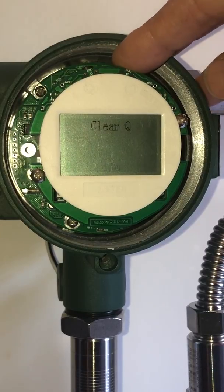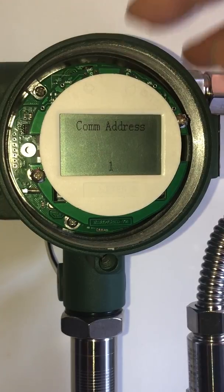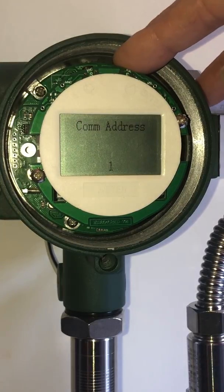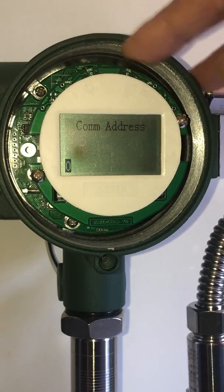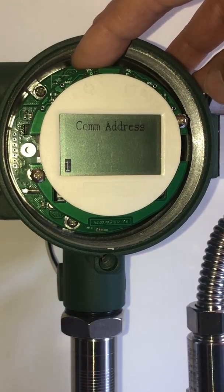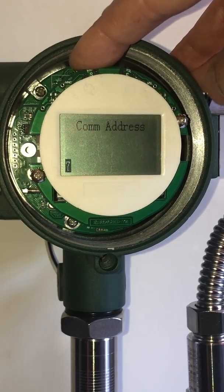So let's go to the comm address. When you change it, you hold down the right button for a long time. Then you can increment the number, so we can go to really high numbers.